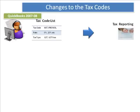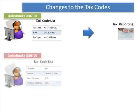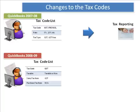In QuickBooks 2008-2009, we see a change to this. At the transaction level — either the invoice, check, or bill — you'll still see the same tax code list, and you'll be able to apply that tax code to that transaction line. But if you go into the tax code list itself to edit those tax codes, you'll be able to select whether that tax code is taxable, non-taxable, or exempt, and you'll be able to link that tax code to a sales tax item or a purchase tax item.